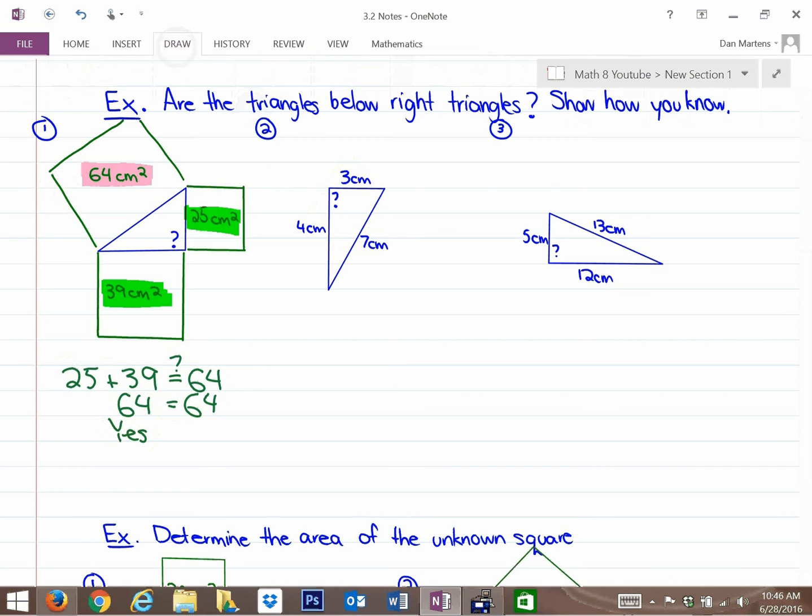So we're going to have to actually draw, or at least do the numbers for the areas here. So this area here is actually 3 times 3, which is 9 centimeters squared. This area is 4 times 4, which is 16 centimeters squared. And this large area, and again, even if you look at the numbers realistically, it's impossible to have a triangle with side lengths of 3, 4, and 7.